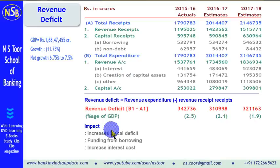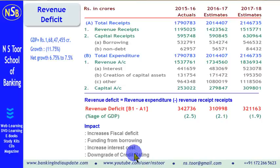All this leads to a downgrade of the credit rating of the country. International credit rating agencies like Moody's and Standard & Poor's downgrade the country's rating, and once the country rating is downgraded, getting loans from outside the country becomes more expensive both for the government and the corporates.